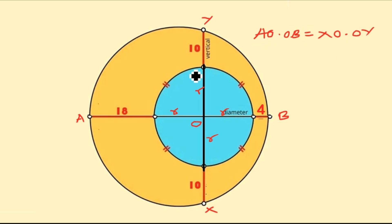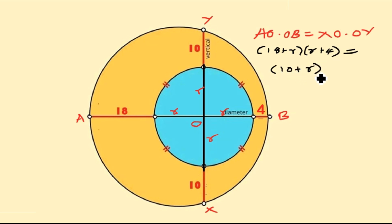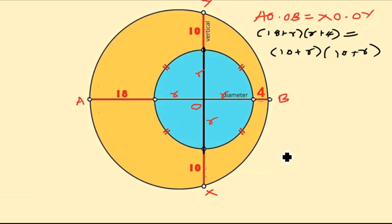Now let us substitute the values. From A to O is 18 plus r, times from O to B which is r plus 4. From X to O is 10 plus r, times from O to Y which is r plus 10 — the same as 10 plus r.